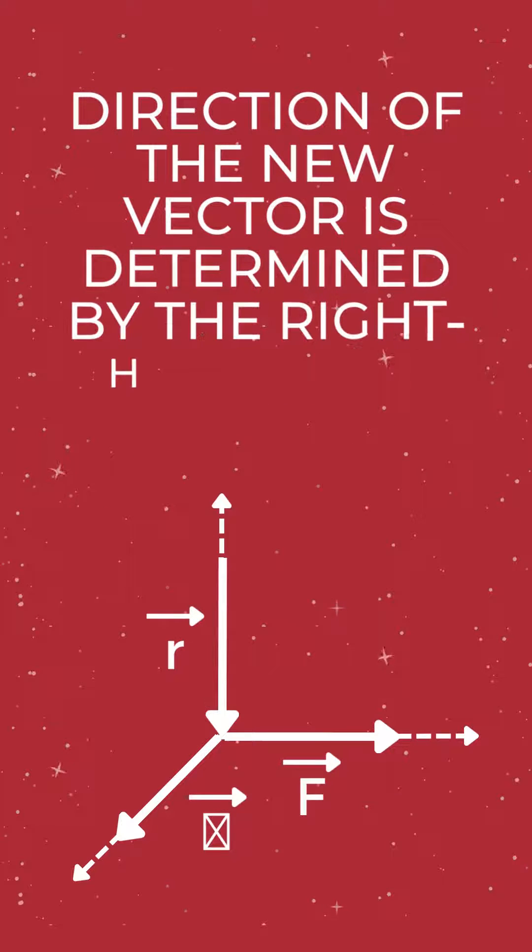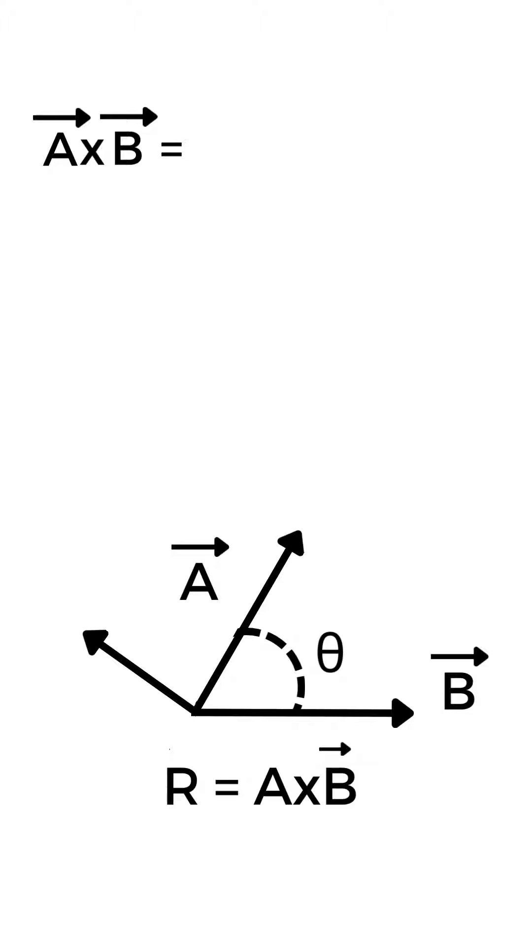The direction of the new vector is determined by the right-hand rule. It is calculated by multiplying the magnitude of one vector by the magnitude of the other vector, and then multiplying by the sine of the angle between them.